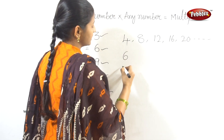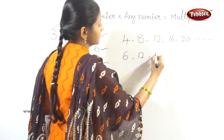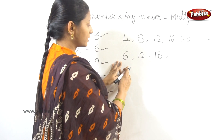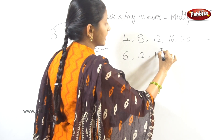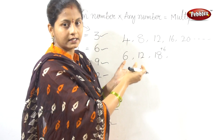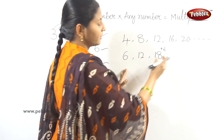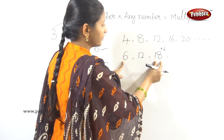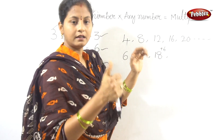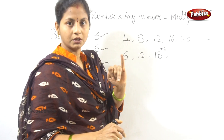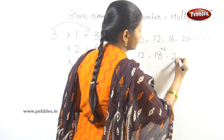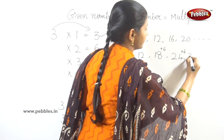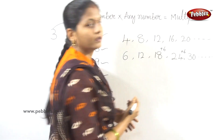Multiples of 6: 6 ones are 6, 6 twos are 12, 6 threes are 18. After 18, instead of writing the full table, we add 6 each time: 24, then 24 plus 6 is 30. The next multiple is obtained by adding 6 each time.